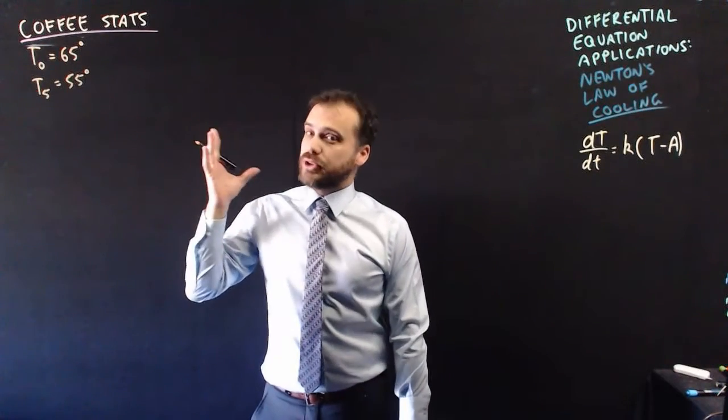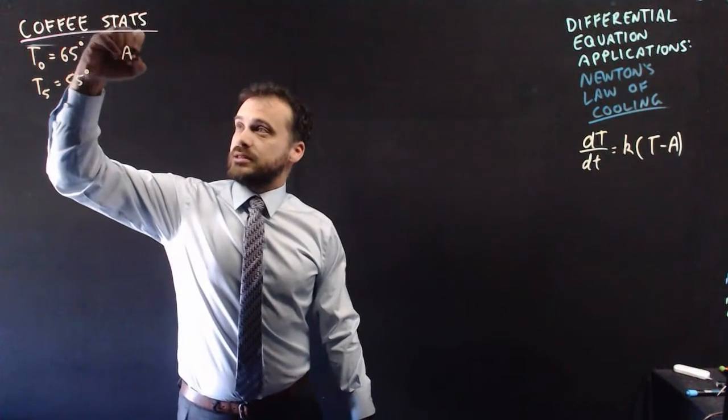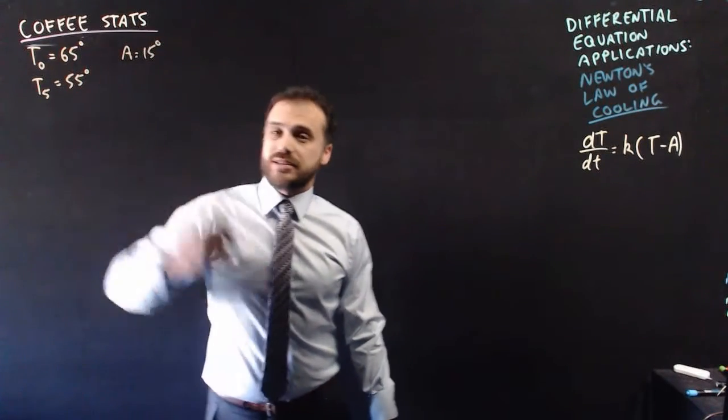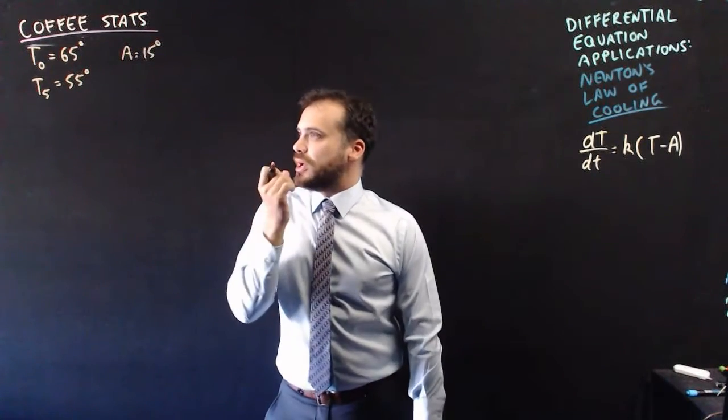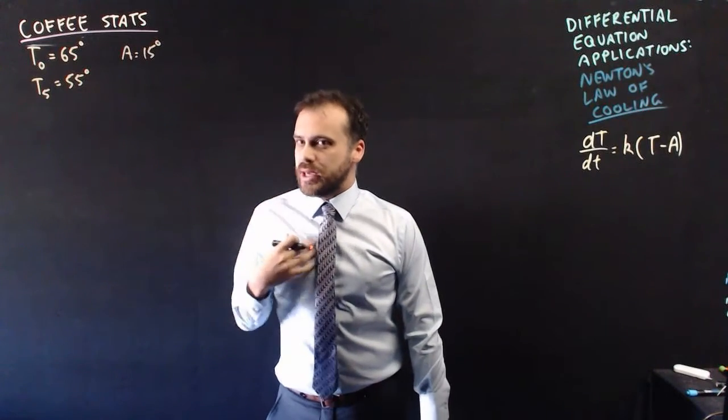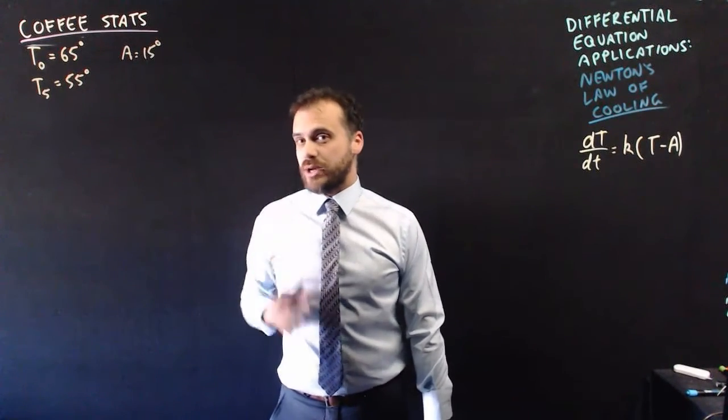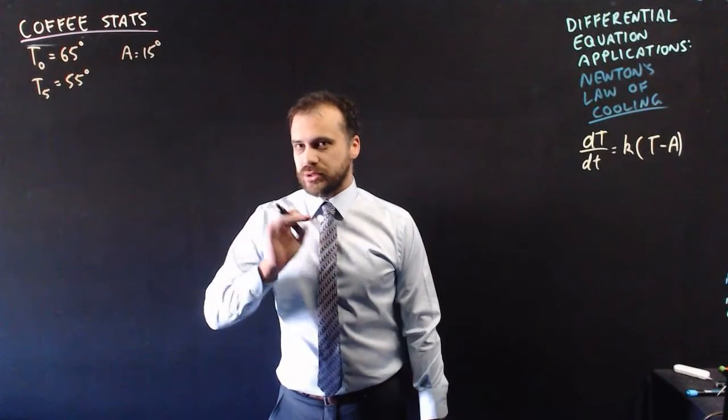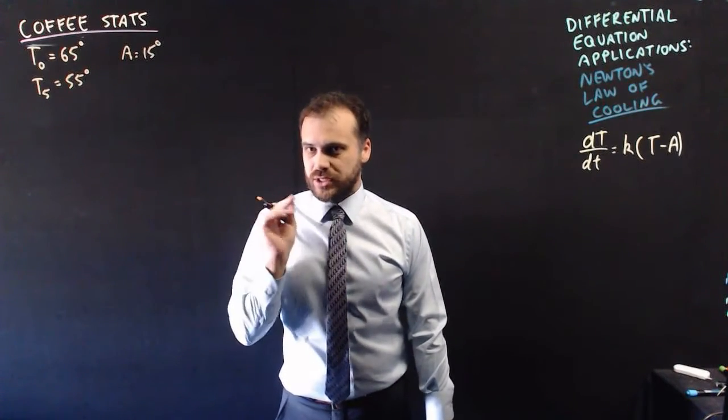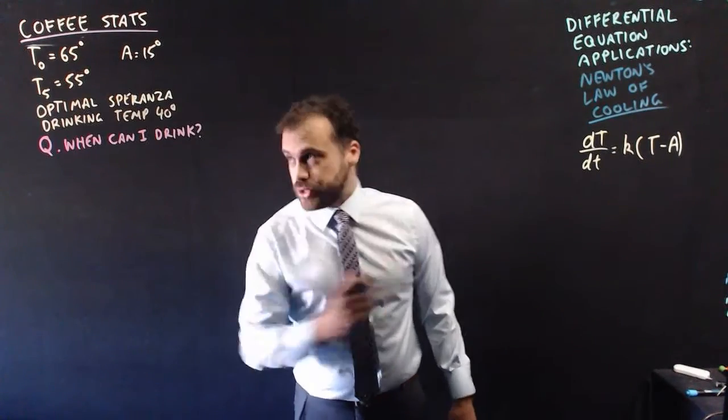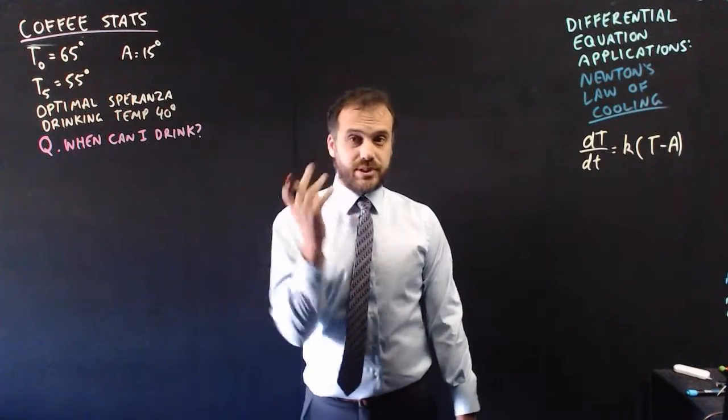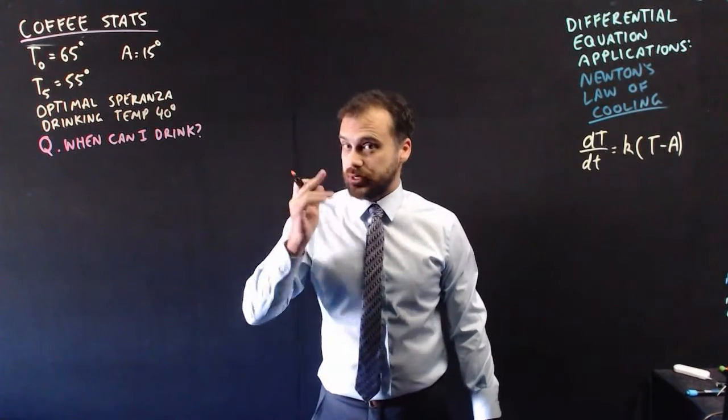What else can I tell you? I can tell you that the ambient temperature today is 15 degrees Celsius at the moment. And me, personally, I cannot drink hot coffee at all. I've really got to wait for it to cool down a lot. My optimal Sporanza drinking temperature is 40 degrees. Of course, the obvious question is, when can I drink this particular cup of coffee on this particular day?